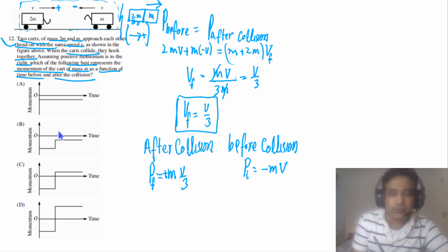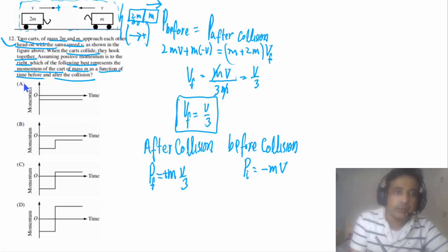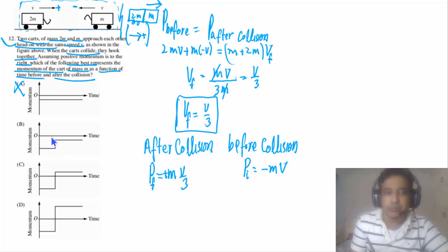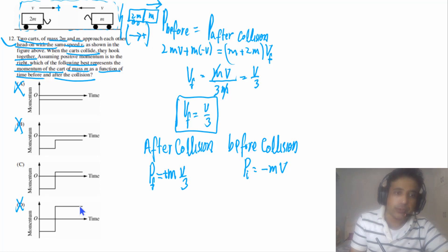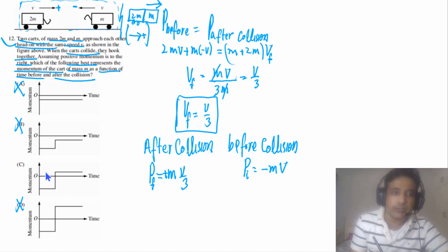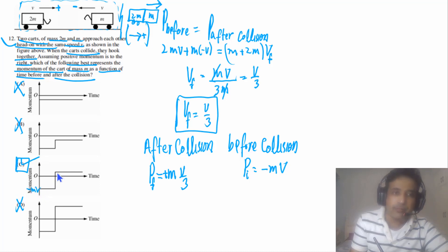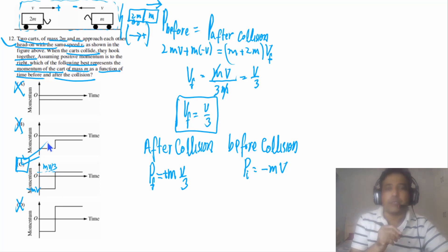Looking at the given options: one option shows no change in momentum of mass M — incorrect. Another shows momentum still negative after collision — incorrect, since after collision it is positive. Another shows the same magnitude — also incorrect, since the magnitude after collision is smaller. Option C is correct: initial momentum is -MV and final momentum is MV/3.